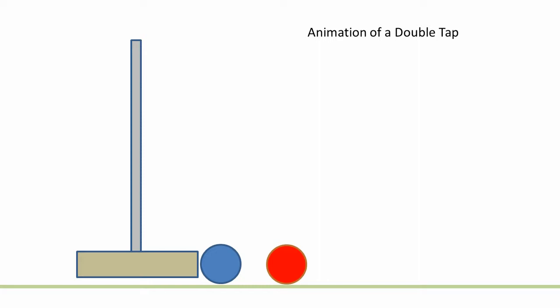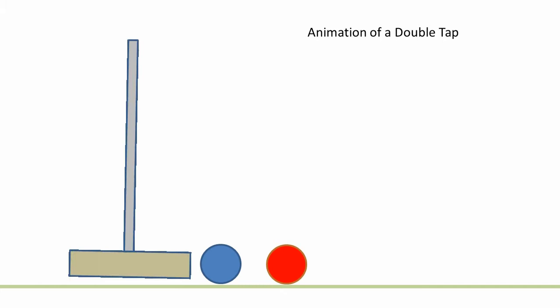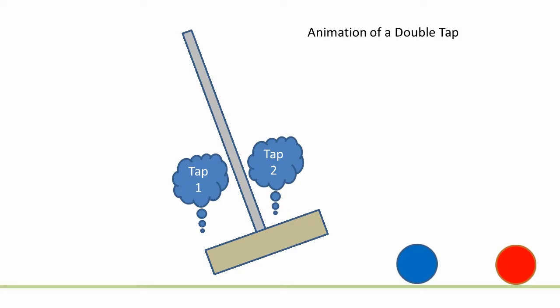In this animation, your blue ball and the target red ball are close together. A normal swing will give the first tap followed by the second tap of your ball as the mallet follows through.